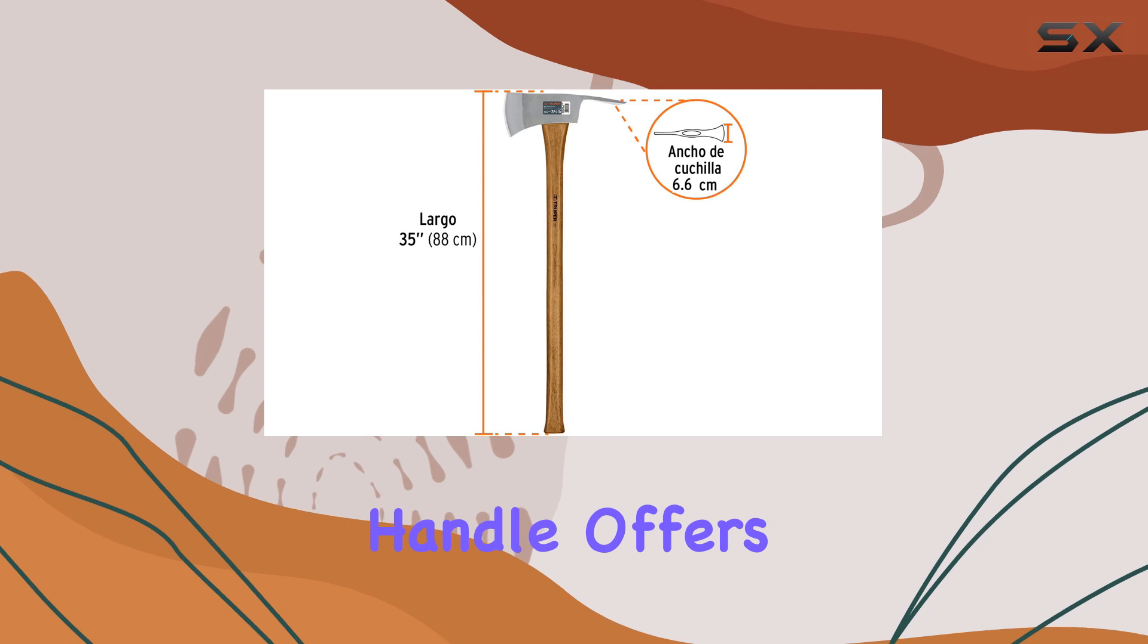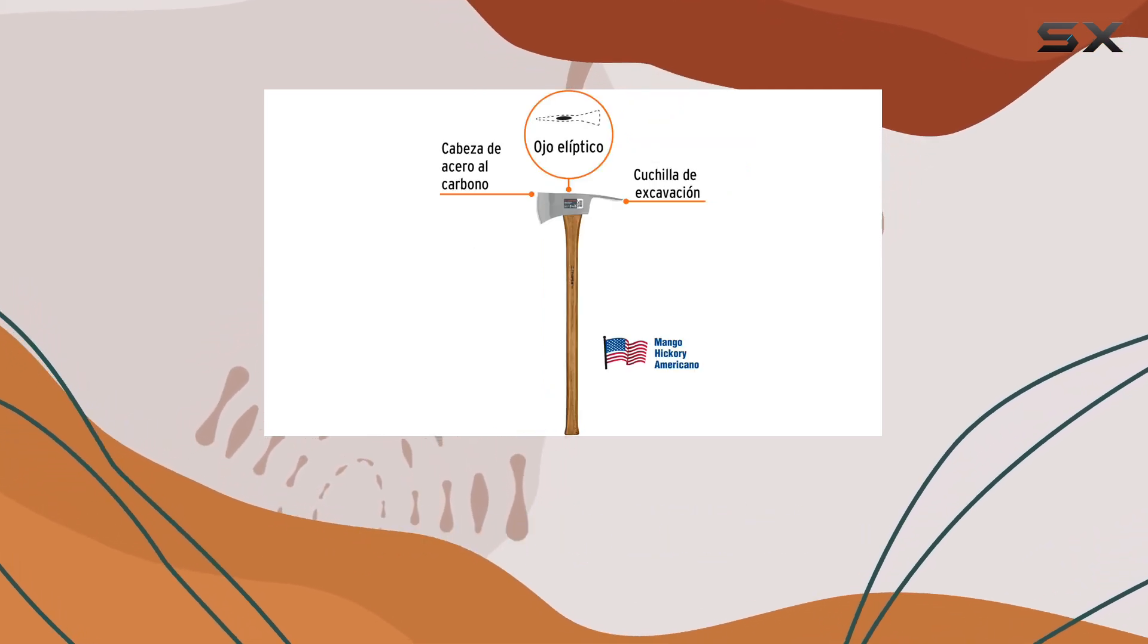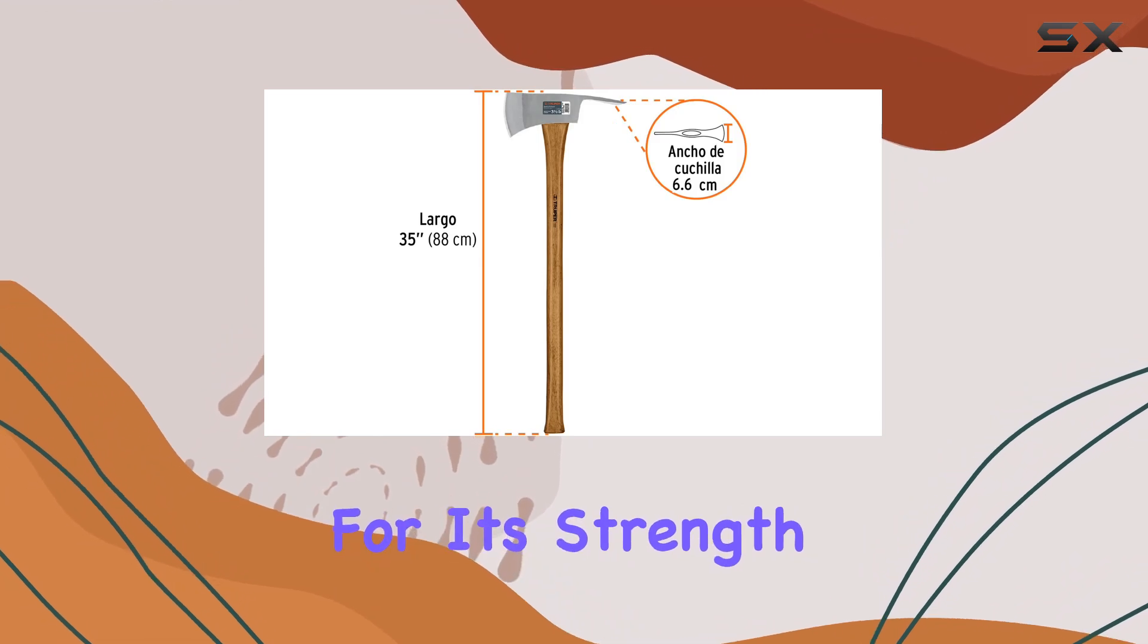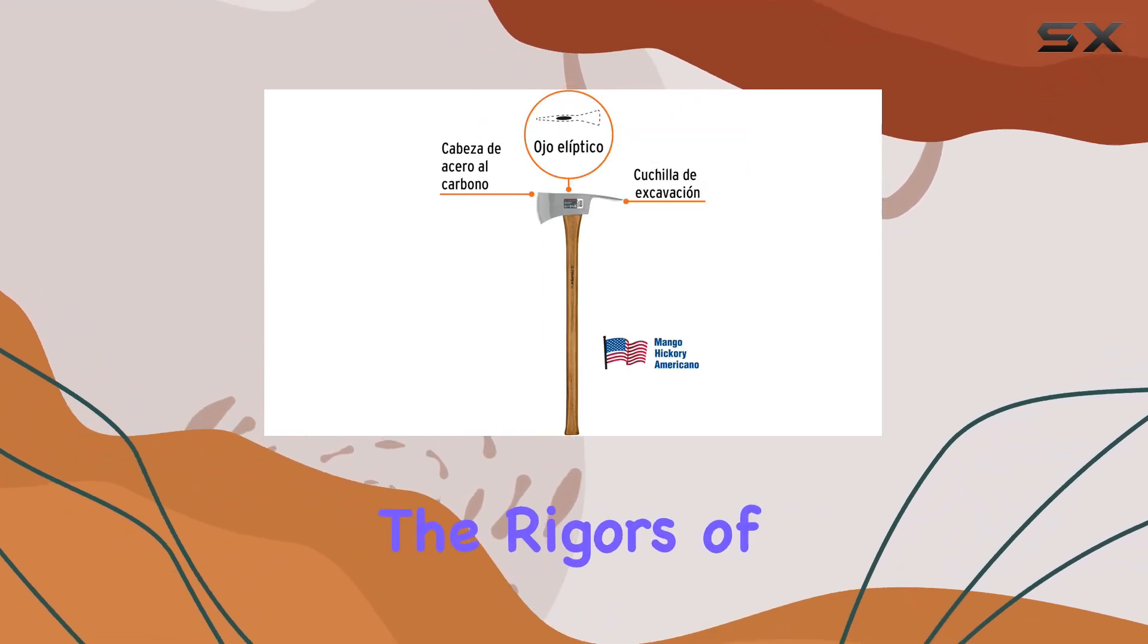The 35-inch hickory handle offers a comfortable grip while providing substantial leverage for powerful swings. Hickory is known for its strength and shock absorption, so you can rely on this handle to withstand the rigors of heavy use.